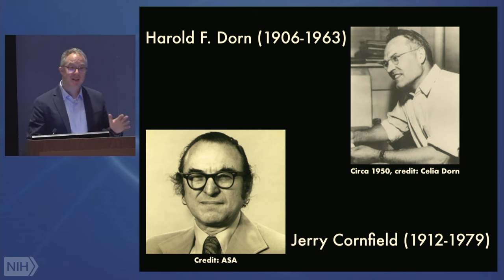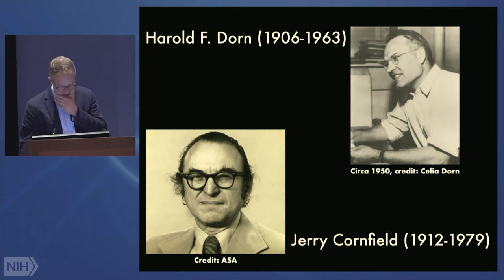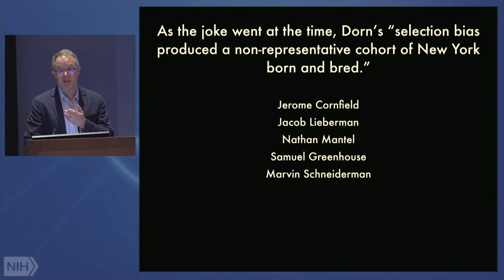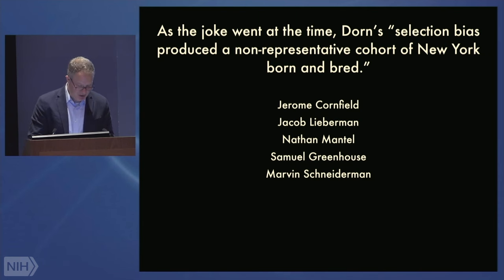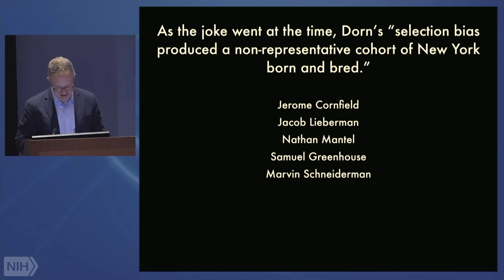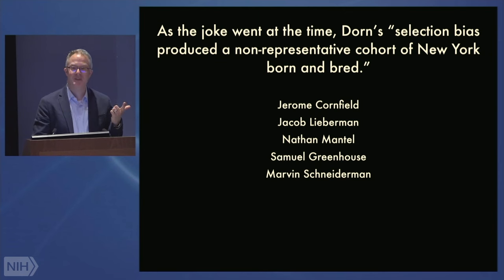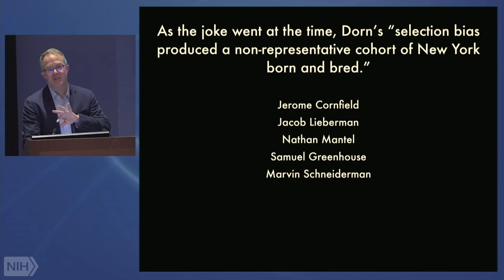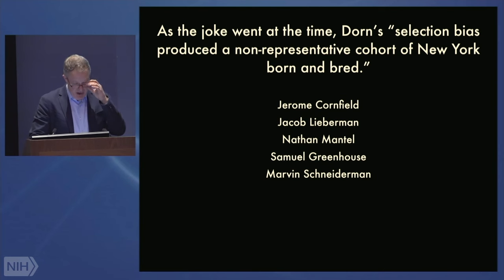You look at Dorn and Cornfield in 2024 and your first thought isn't that that's a diverse group at NIH. But as the joke went at the time, and it's one of those jokes that is telling for historians, Dorn's selection bias produced a non-representative cohort of New York born and bred — and for New York, just read Jewish. Indeed, what you have here are Jerome Cornfield, Jacob Lieberman, Nathan Mantel, Samuel Greenhouse, Marvin Schneiderman. In 1939 at City College, not only did Nathan Mantel and Marvin Schneiderman graduate the same year, but also Bernie Greenberg, who would be a long-time leader of statistics at the University of North Carolina. This is a small group of people, by and large denied access to academic mathematics, who moved into the fields through statistics.